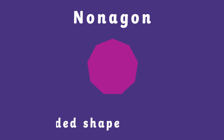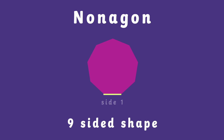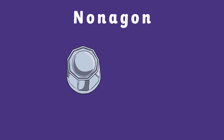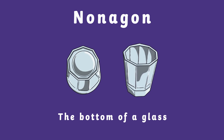A nonagon is up next. This shape has nine sides. One, two, three, four, five, six, seven, eight, nine. You can sometimes spot a nonagon shape on the bottom of your glass.